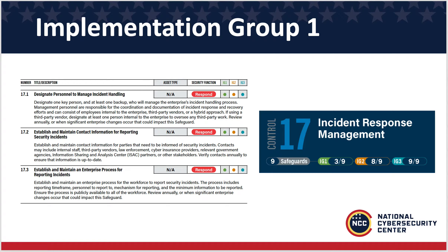If someone sees that their computer crashes consistently or the network speeds are extremely slow when they really shouldn't be, those are some simple signs that something could be going wrong. But if they don't know who to call or who to report that to, someone focused on their day-to-day is not going to take the extra time — they're just going to let it go. So knowing exactly who to call and giving people that contact info is essential.